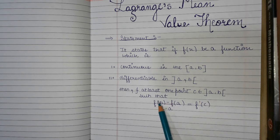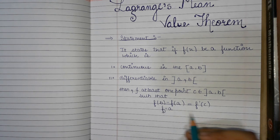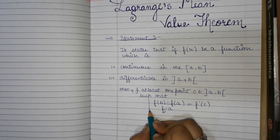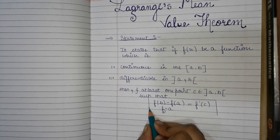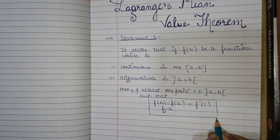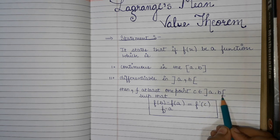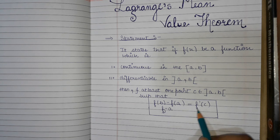Such that f(b) minus f(a) divided by b minus a is equal to f'(c). That is, if a function is continuous and differentiable, then there exists a point c in open interval (a, b) such that f(b) minus f(a) by b minus a equals f'(c).